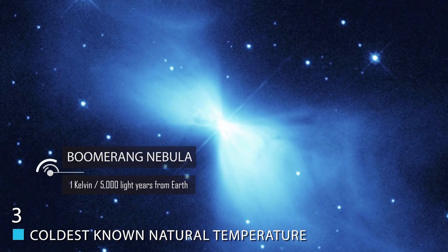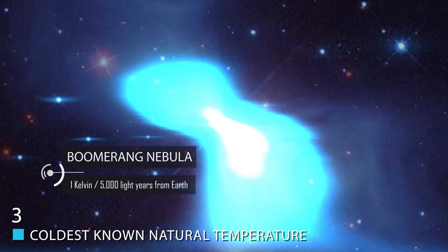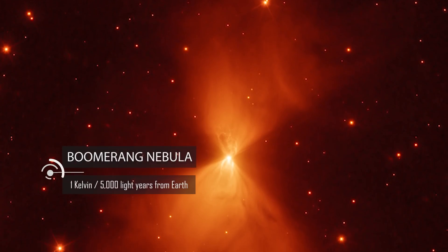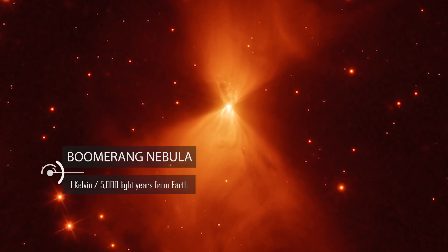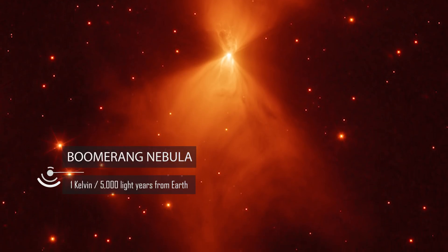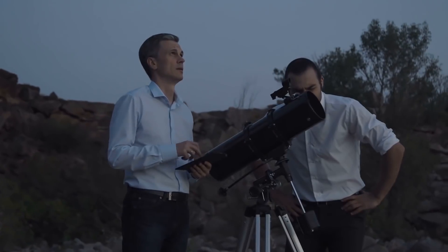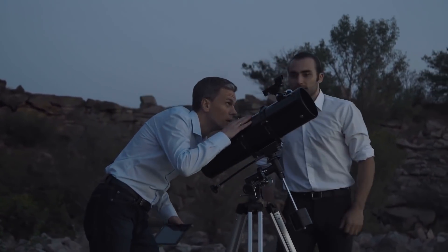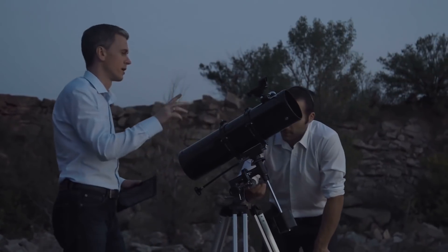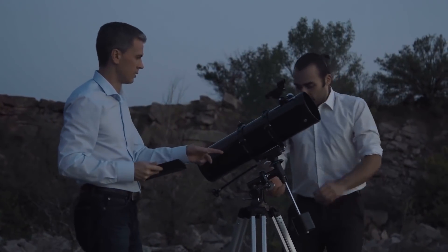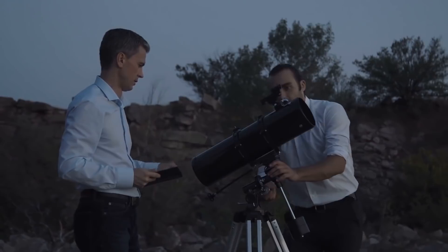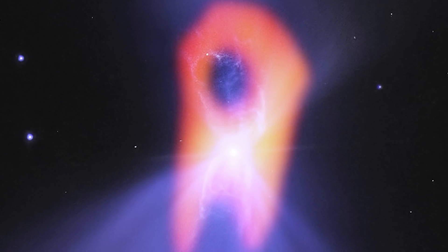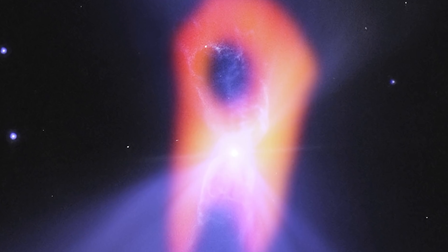The coldest known natural temperature in the universe is 1 Kelvin, the temperature of the Boomerang Nebula, which is about 5,000 light-years from Earth, in the direction of the southern constellation Centaurus. It was first identified by Australian astronomers in 1979. Its name is derived from symmetry of its structure as seen from ground-based telescopes, as it looks like a boomerang or, more possibly, a bowtie.